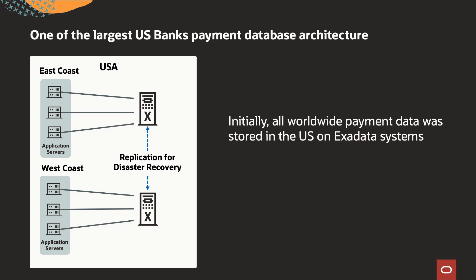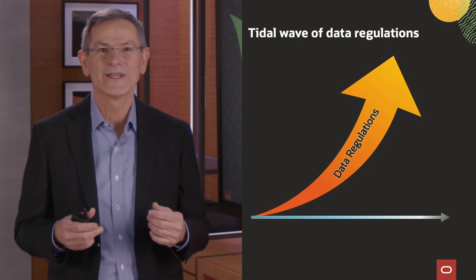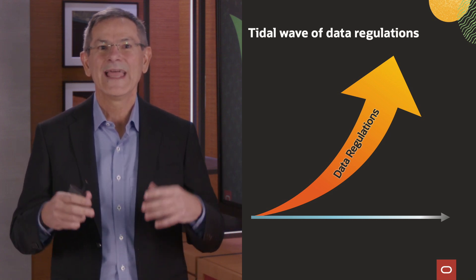One of the largest US banks had to re-architect their payment database to satisfy this directive. Initially they stored all worldwide payment data in the US on an Exadata system, with the application and database tiers replicated across regions inside the US for disaster recovery. Oracle Globally Distributed Database helped the bank comply with the India Directive — new shards were created in India to hold Indian data, requiring minimal application changes. The highly complex application tier architecture did not need to be redundantly deployed in India. One thing I can guarantee is that data regulations will only increase. Oracle Globally Distributed Database has features that can help you surf this tidal wave of regulations instead of being drowned by it.